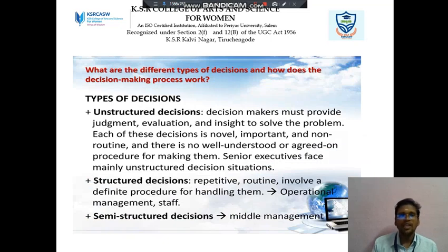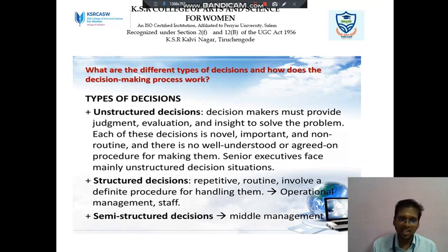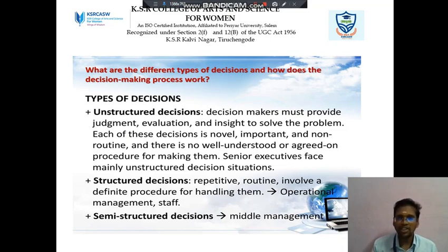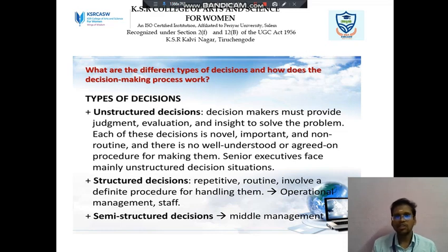Next we discuss about decision making types. There are three types available. One is the unstructured decision, then structured decision, then semi-structured decision. Unstructured decisions mean decision makers must provide judgment, evaluation, and insight to solve the problem. Structured decisions are routine and involve a definite procedure for handling them; for example, operational managers and staff carry them out. Semi-structured decisions are taken at the middle-level management.